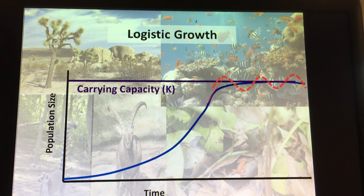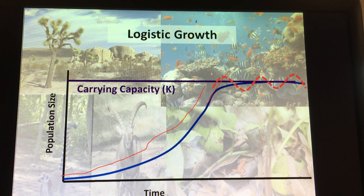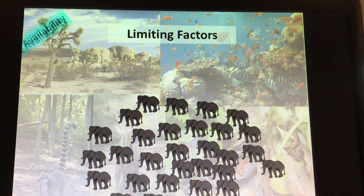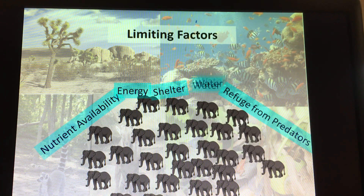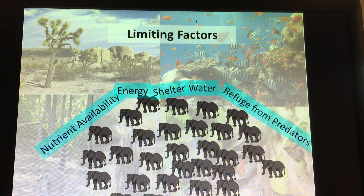Populations can grow exponentially to a point, but eventually competition and other things called limiting factors will limit how big that population gets. Limiting factors could be nutrient availability — the amount of food, whether it's in the soil, whether it's prey, whether it's plants for herbivores, or the amount of energy in an ecosystem. One bear requires 20,000 calories — is there enough food in a forest to support a large bear population?